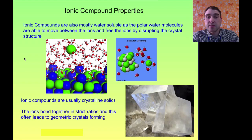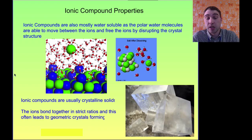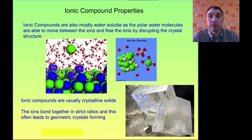Other properties: ionic compounds are mostly water-soluble because the polar water molecules can surround the ions and pull them away from each other, breaking up the crystal structure. When in solid form, they're usually crystals of varying shapes. This is because they form together in geometric ratios, and in a 3D structure, you get regular 3D structures — for example, cubes.